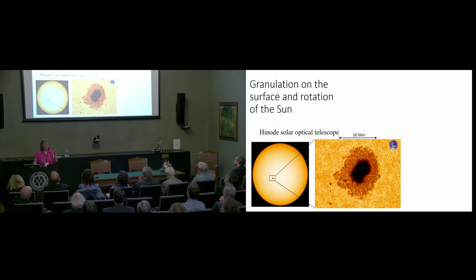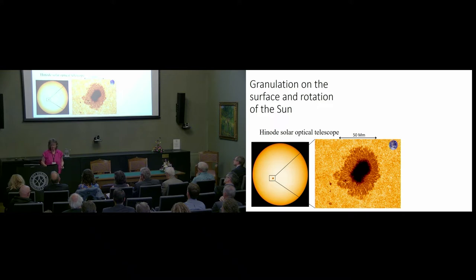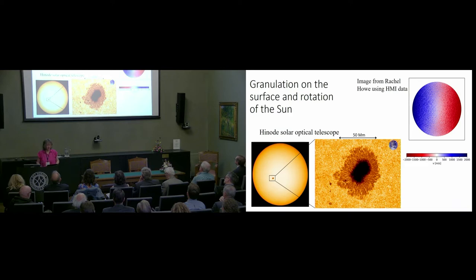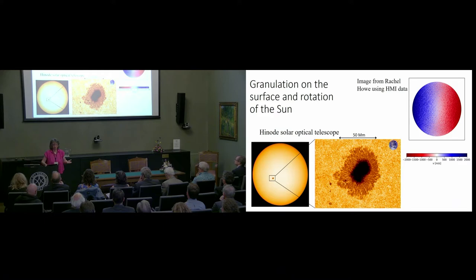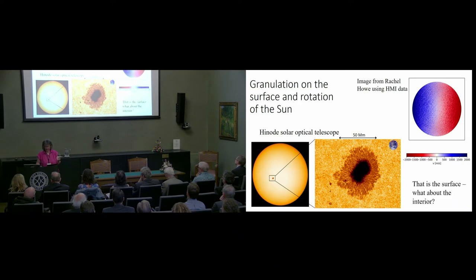The Sun is rotating, so one part will be coming towards me at any one time and the other part going away. I can image that with the Doppler effect. This is HMI space data — you can see blue for approach, red for recession, plus or minus two kilometres per second, kind of small. In the centre there's a grey zone because the motion is transverse and I'm therefore not measuring a Doppler effect. Also on the surface is the mottliness — that's the granulation and also the oscillations.